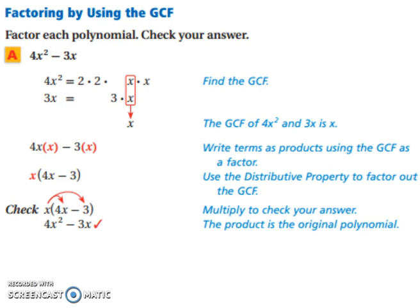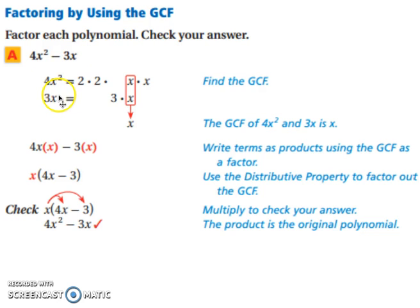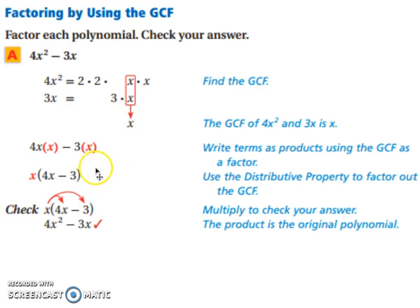We're going to factor by using the greatest common factor. We are given 4x squared minus 3x. We need the greatest common factor of 4x squared and 3x. If we write out the prime factorization of each, the only piece that is in common is x. Therefore, you can take out an x.